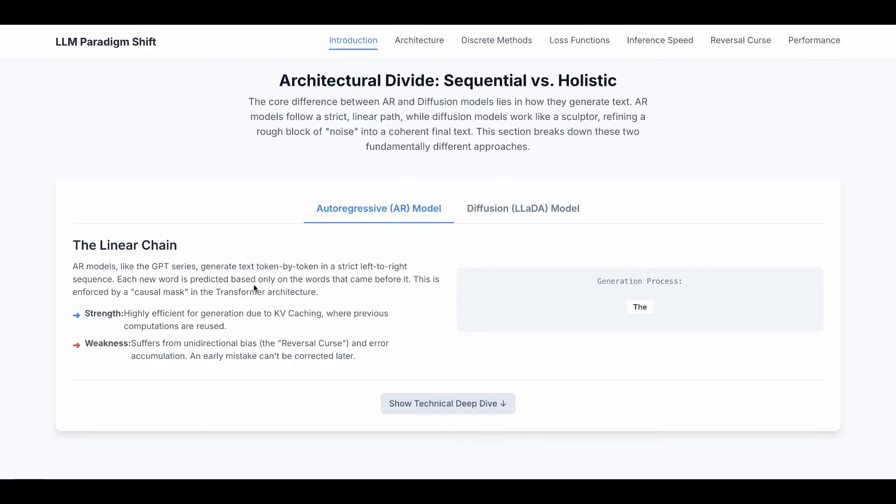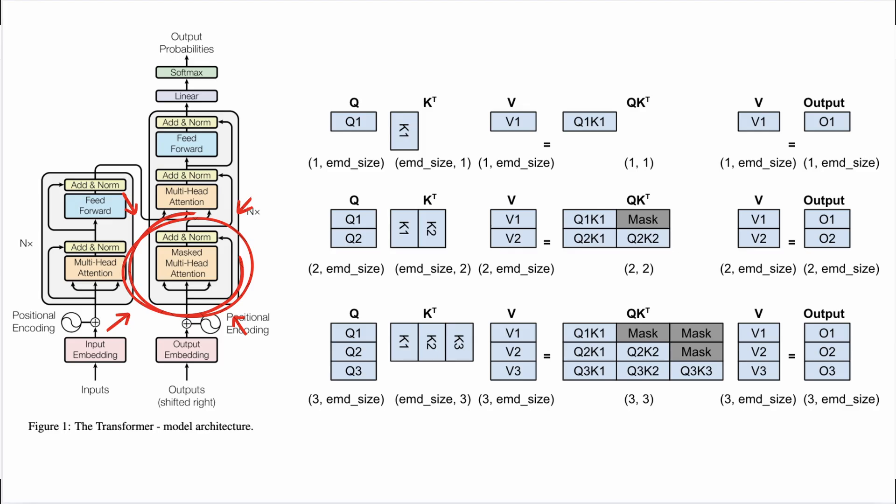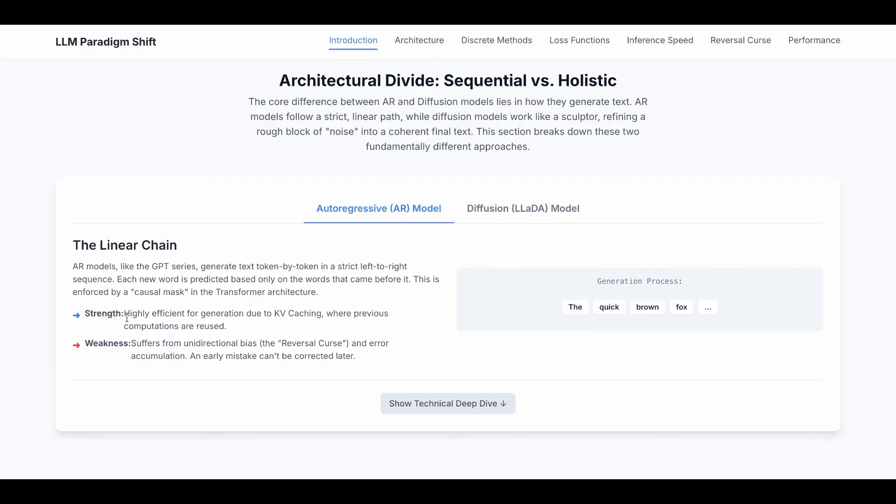Each new word is predicted based on only the words that came before it. This is enforced by a causal mask in the transformer architecture. I've gone through this in the transformer deep dive. The strength is it's highly efficient for generation due to KV caching, where previous computations are reused, so it's cheap.